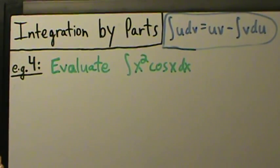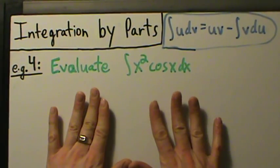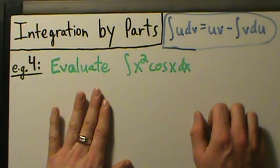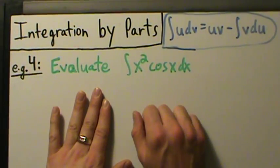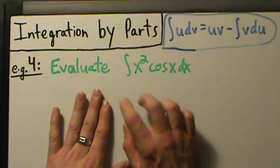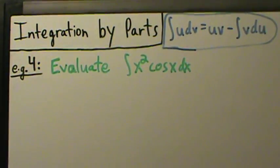Here's example four with integration by parts. Sometimes when you do problems with integration by parts, you might have to use it more than once. This is going to be an example where we have to use it twice to evaluate this integral. So let's go ahead and get started.